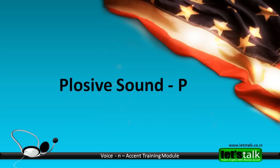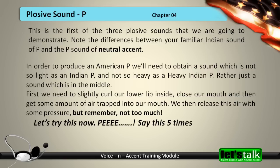Plosive sound P. This is the first of the three plosive sounds we are going to demonstrate. Note the differences between your familiar Indian sound of P and the P sound of neutral accent. In order to produce an American P, we need a sound which is not so light as an Indian P, and not so heavy as a heavy Indian P — rather, just a sound which is in the middle.